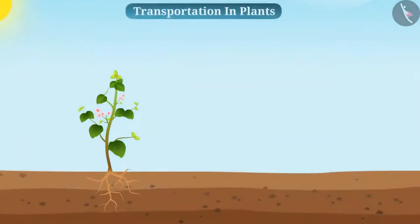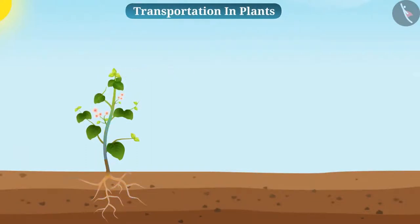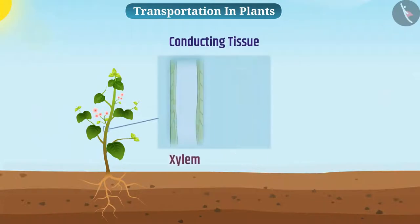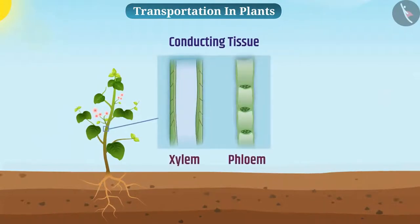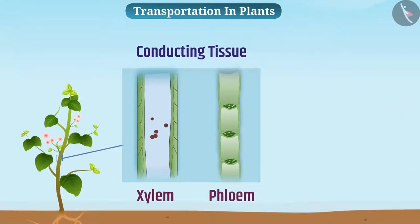Let us first talk about transportation in plants. In plants, the function of transportation of various substances takes place with the help of conducting tissue xylem and phloem. Xylem carries water and minerals while phloem carries food and other substances.